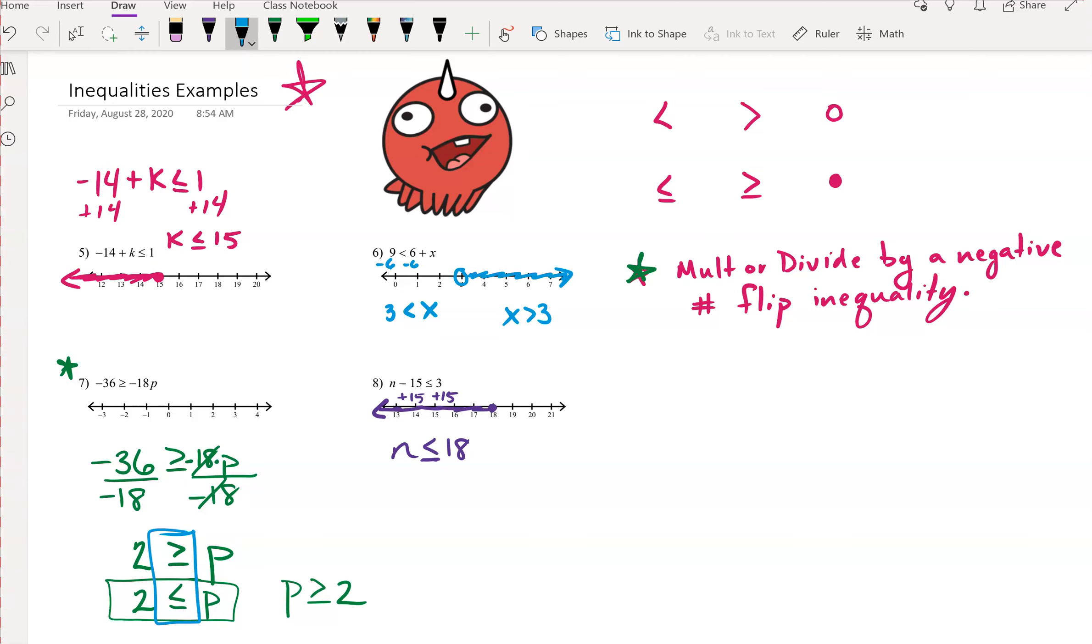Okay, so we are graphing p is greater than or equal to 2. That is going to be a solid circle at 2, and values that are bigger will be shaded this way.